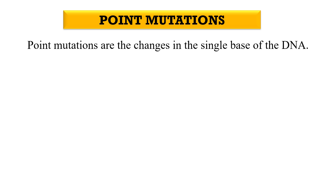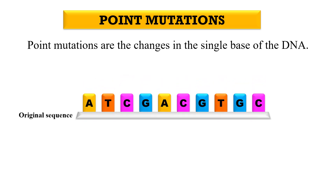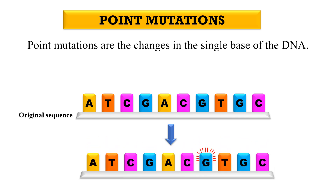First, point mutations. Point mutations are changes in a single base of the DNA. From this animation it will be clear — this is the original DNA sequence where A, T, C, G represent the bases: A for adenine, T for thymine, C for cytosine, and G for guanine. In case of point mutation there will be a change in the single base pair, as you can see here with the red bars representing the change — for example, at the guanine nucleotide. So point mutations are where changes occur in just one base pair of the DNA.